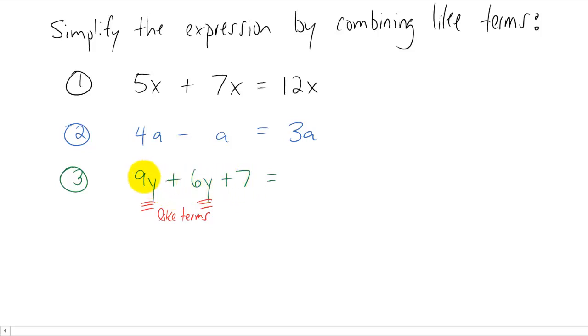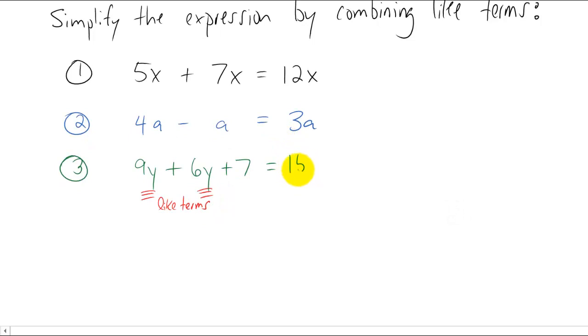So the only thing we can do is ask the question, what if we had nine of something and added six of that same thing? Well we would be left with fifteen of those things. But we still have this plus seven here. Well the plus seven just has to be carried over. So we combine the like terms 9y and 6y to get 15y. And then the plus seven just stays.